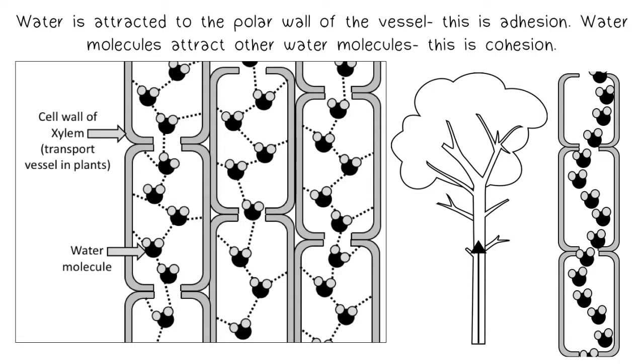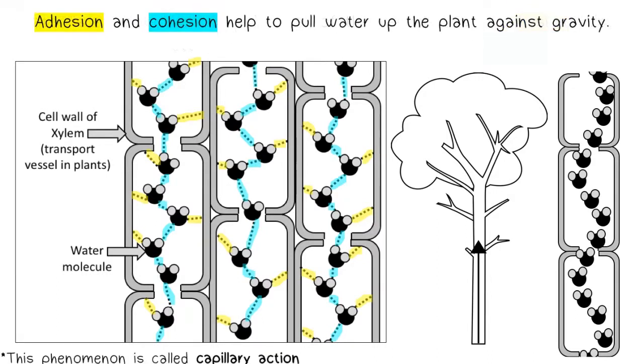Water is attracted to the polar wall of the vessel. This is adhesion. Water molecules attract other water molecules. This is cohesion. Adhesion and cohesion help to pull water up the plant against gravity.